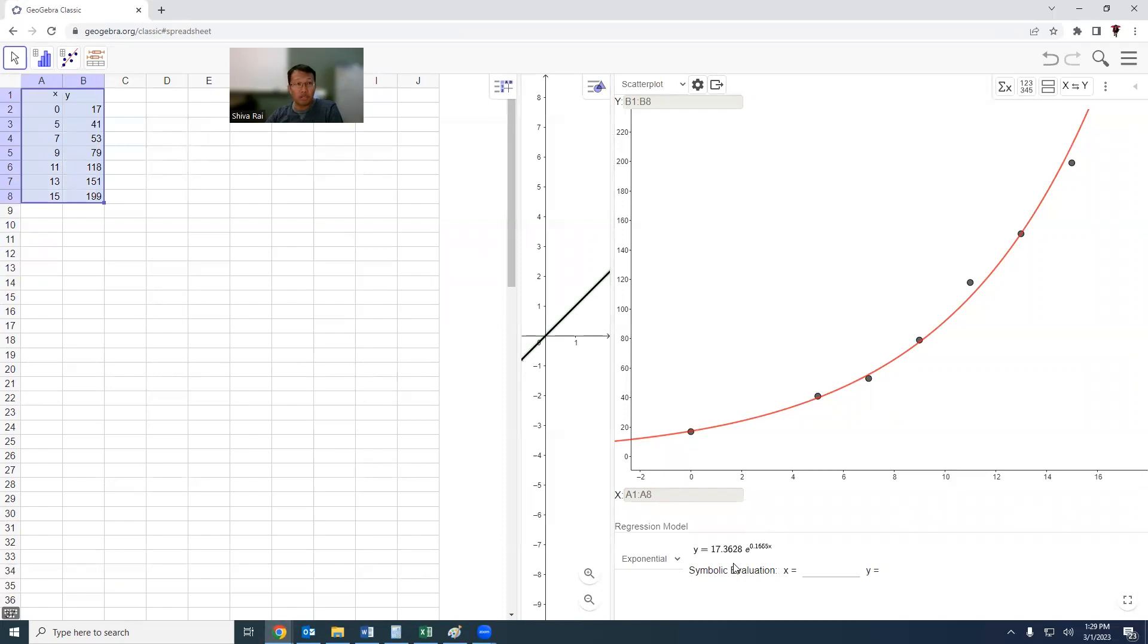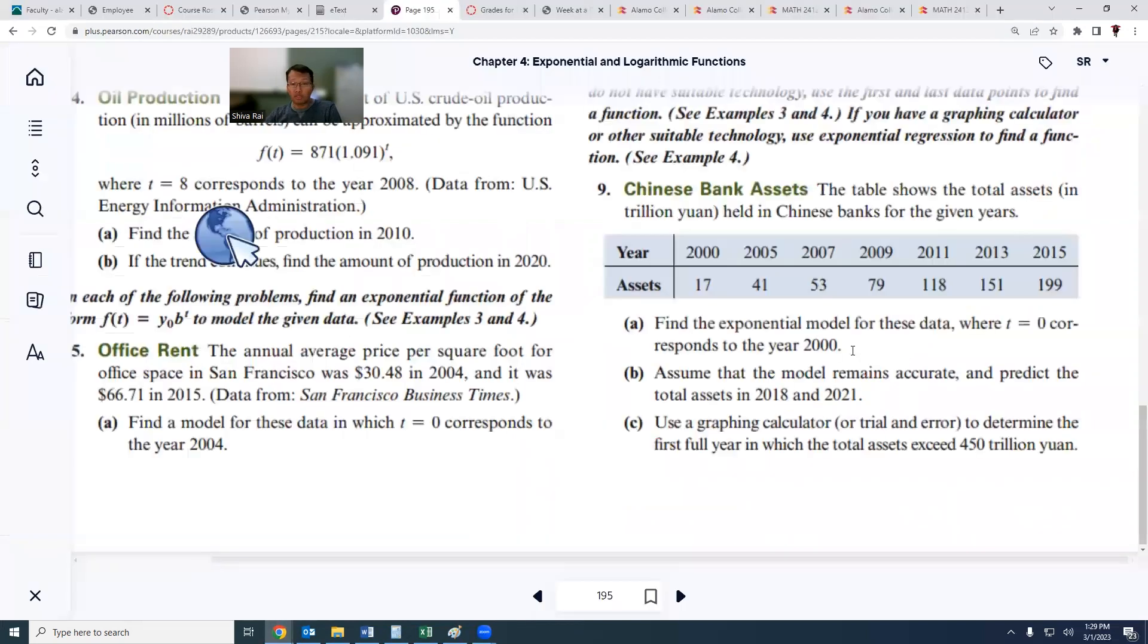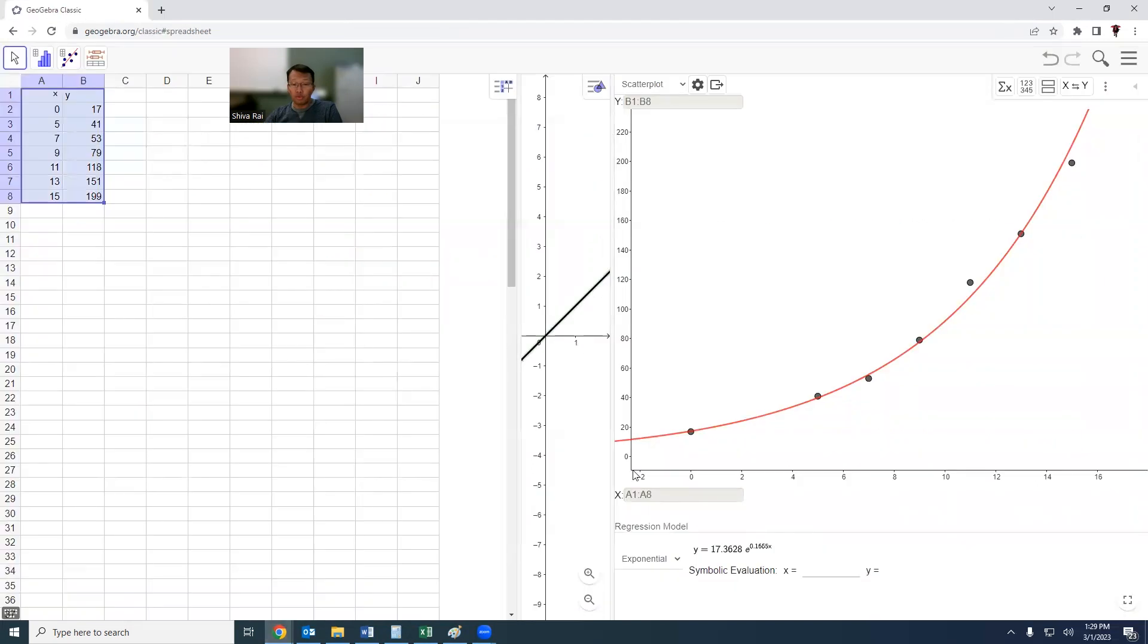Now we would like to solve these two problems. What will be the total assets in 2018 and 2021 if the model remains the same? 2018 means we can simply write down 18 for 2018, and then you can see that is 347.4335 trillion yuan.